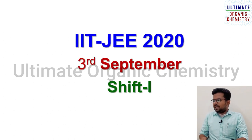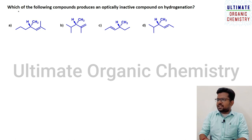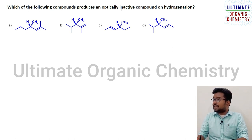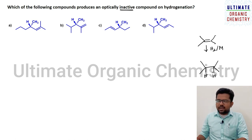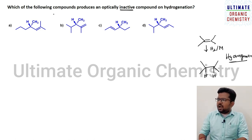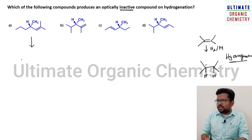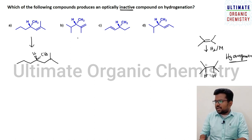Now let us discuss the third September shift one questions. Which of the following compounds produces an optically inactive compound on hydrogenation? When you treat an alkene with hydrogen in the presence of a metal, the double bond is converted into a single bond — this is hydrogenation. We need to find which product is optically inactive. Treating each compound under hydrogenation: the first gives a product with four different groups — optically active. The second product has two same isopropyl groups.